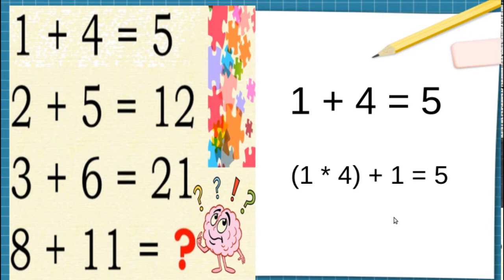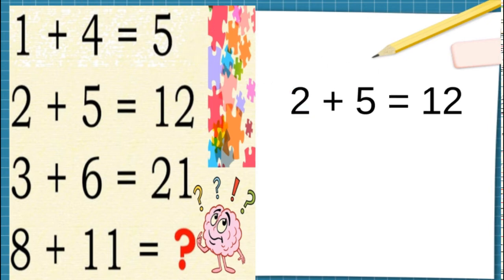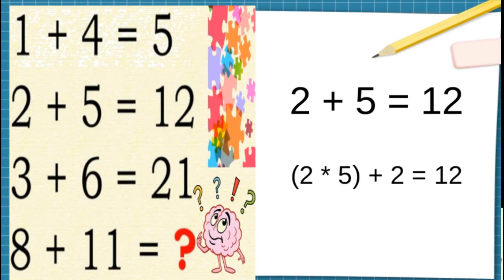Let's solve the second equation as well. The second equation is 2 plus 5 is not equal to 7. It is 12. So how do we solve this equation? (2 × 5) + 2 equals 10 plus 2, which becomes 12.